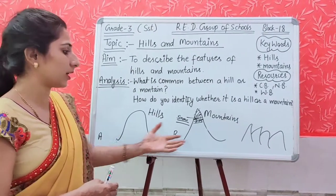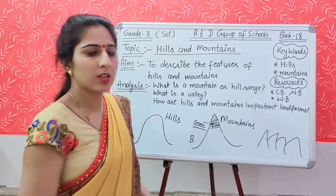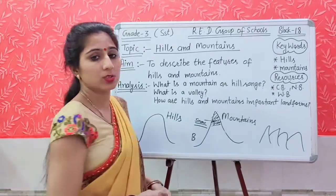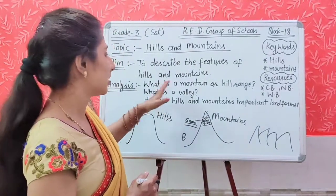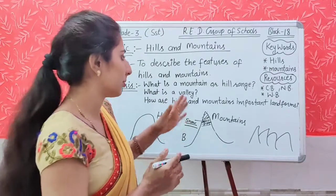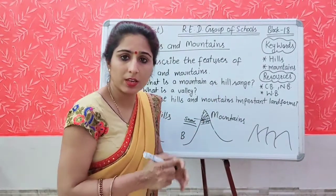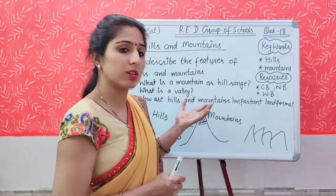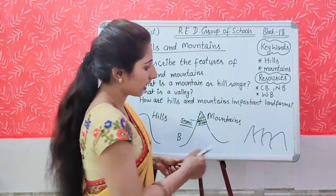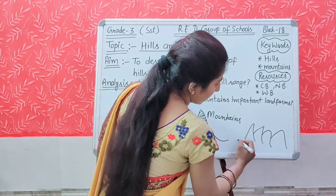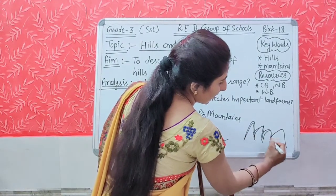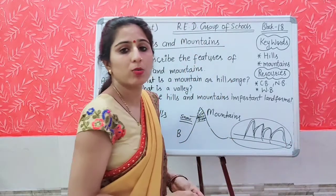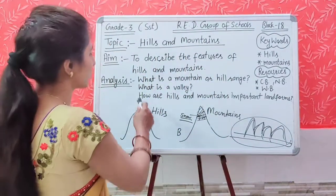What is a mountain range or a hill range? When a number of mountains or hills are arranged together in a series, it is called a mountain range or a hill range. When they are arranged together like this, it is called the mountain range or the hill range.